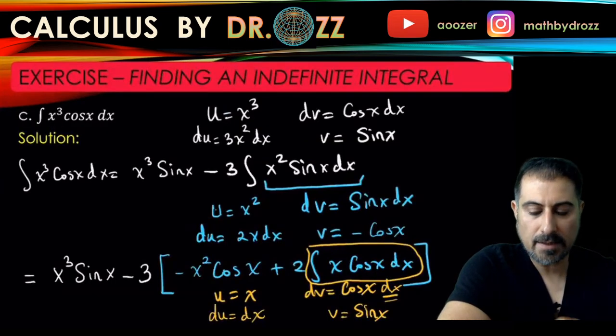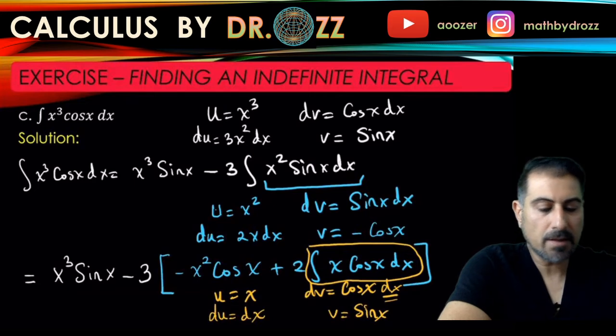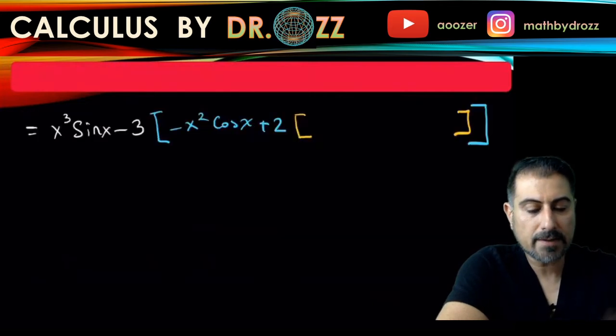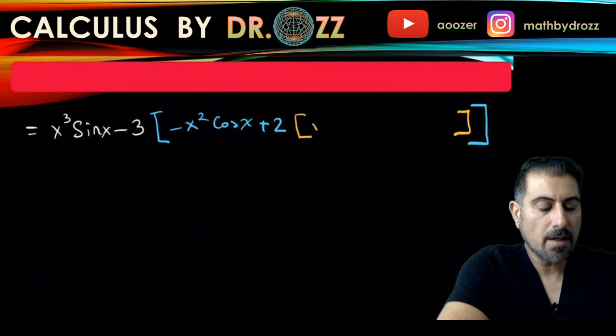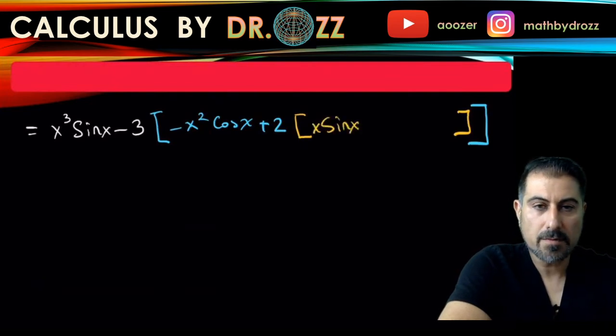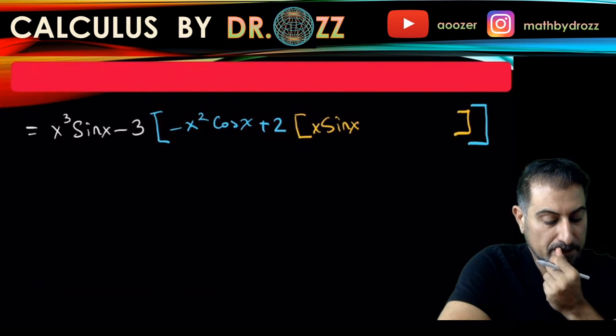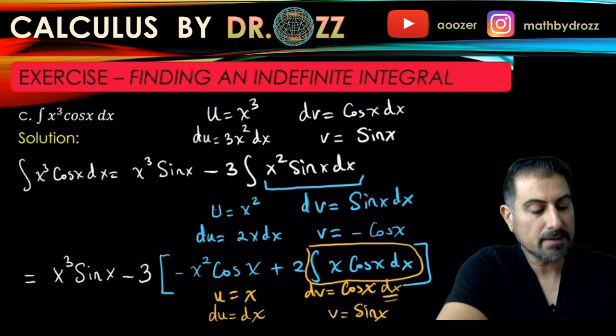So u is x and sine x, so I'm going to go ahead and put x sine x here minus vdu, right? So let's go back here. Minus v times du, that is sine x dx, it's sine x dx.